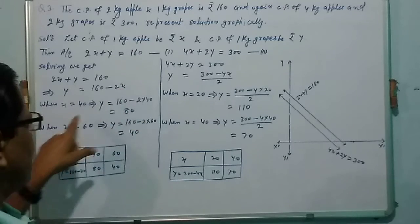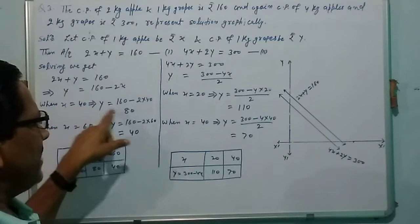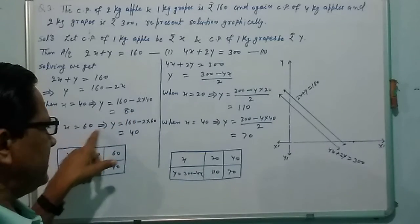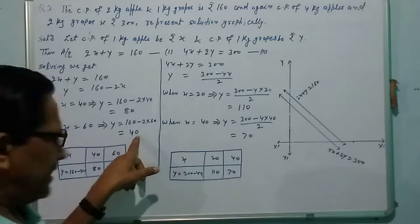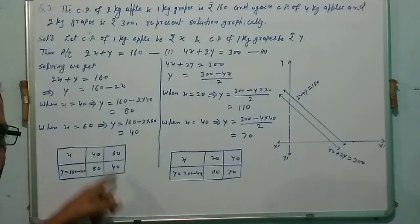We put x equal to 40, then y becomes 80. Similarly, when x equal to 60, then y equal to 40. Now we make a table for the solution.